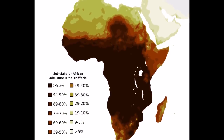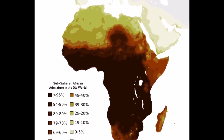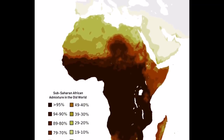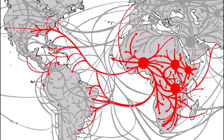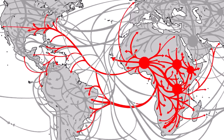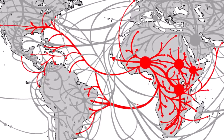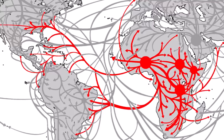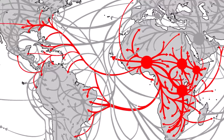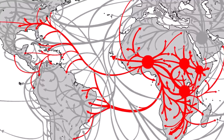Africa has a truly impressive external migration and diaspora as well, with African-descended communities in almost every single country in the Americas due to the colonial slave trade. There were also smaller numbers that had entered the Middle East, North Africa, and South Asia through the Arab slave trade, and there is a much more recent movement into Western Europe.